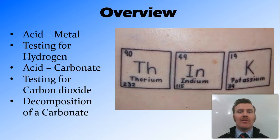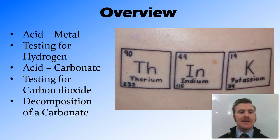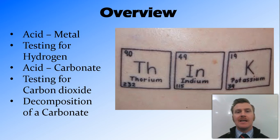In this video, we've looked at the acid-metal reaction where an acid and a metal react to form a salt and hydrogen gas. We've looked at the test for hydrogen gas, being the pop test. We've looked at the acid-carbonate reaction where an acid and a carbonate react to form carbon dioxide, water, and a salt. We've looked at a way to test for this carbon dioxide using the lime water test.